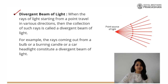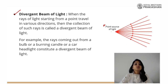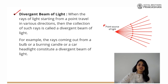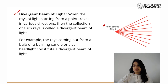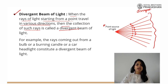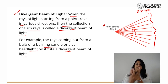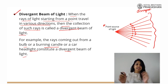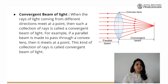Let us now understand divergent beam. A point source is a very small — the size of a pinhead — source of light that gives away light in all directions. So the light rays seem to be going away from each other. Such rays are called a divergent beam of light. When the rays of light starting from a point travel in various directions, the collection of such rays is called a divergent beam of light. Examples include the rays coming out from a bulb, a burning candle, or a car headlight — light going in all directions, diverging from each other.